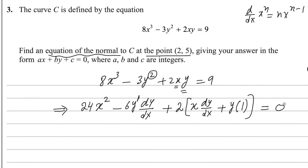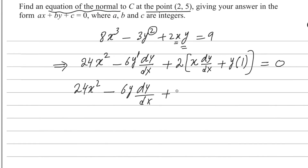Now in the next step, you need to find the value of dy/dx. Expanding the brackets, it becomes: 24x² - 6y·(dy/dx) + 2x·(dy/dx) + 2y = 0.